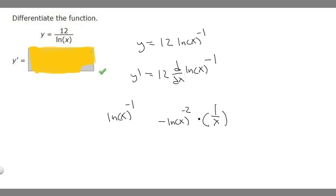So now that we have that, we can rewrite y prime as equal to 12 times minus ln of x to the minus 2 times 1 over x. And so I'm going to rewrite this as y prime equals 12 over x, because 12 times 1 over x is 12 over x, times minus ln of x to the minus 2. And so this is the answer to this question.